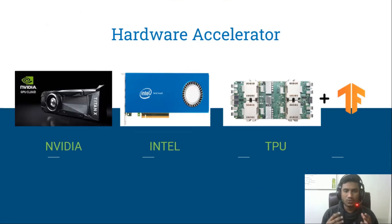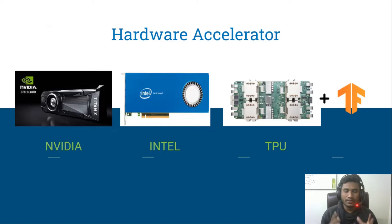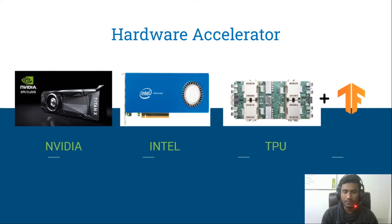Now let's come to the hardware accelerator. Whenever you are working with deep learning, the framework is not the only tool you will be using — there are other tools, mainly the hardware. In machine learning we usually train small statistical models, but in deep learning we need to train a whole neural network architecture. For that we need high computational power, which is not possible with just a CPU, so we use hardware accelerators optimized for deep learning solutions.